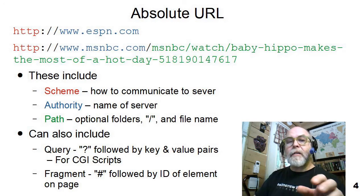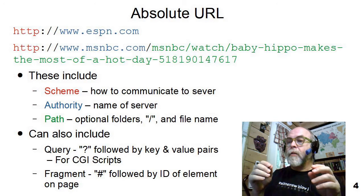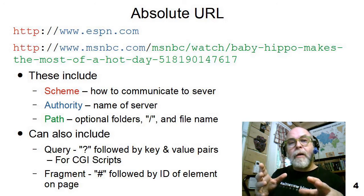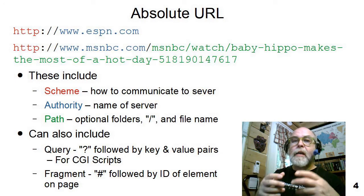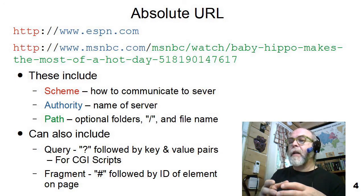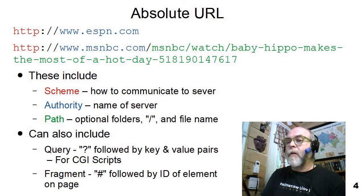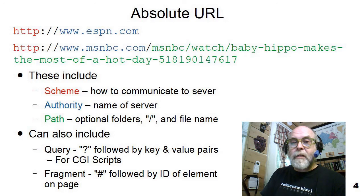An absolute URL contains the full and total address of something on the Internet, on the servers, on the networks. It starts with a scheme, and the scheme tells us how to go get that information — whether it's HTTP, HTTPS, a secured HTTP connection, or FTP, or some of the other services that exist out there on the Internet. You can see the scheme in the URLs above, marked in red, followed by a colon slash slash.